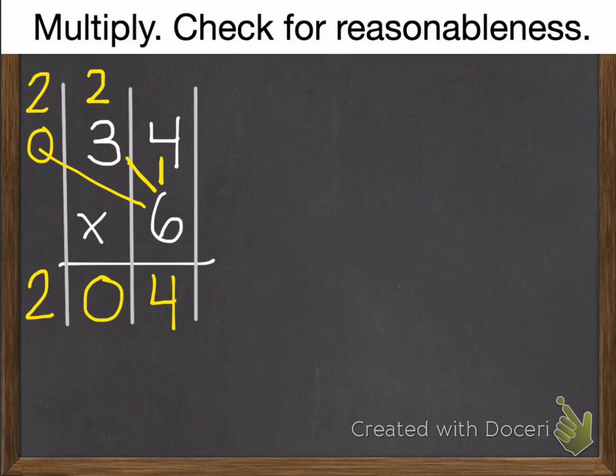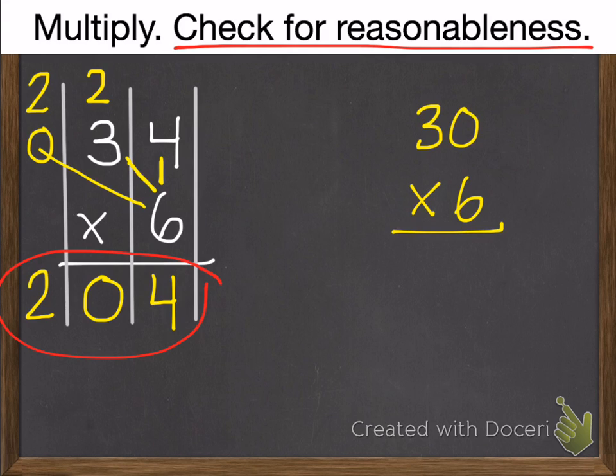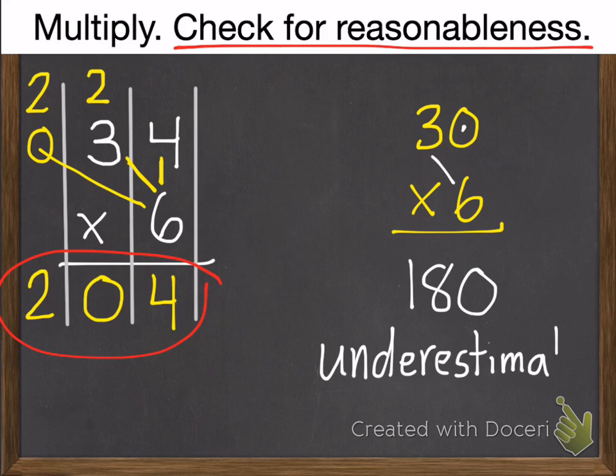But my instructions up here at the top don't just say to multiply. They also say I need to check it. The easiest way to check is to use estimation. So if I round 34 to 30 times 6, I can use my 0 trick. 6 times 3 is 18, plus 1 0 is 180. Since I changed my 34 to a 30, that's going to make this answer a little bit less. So my estimate is an underestimate. So I know the real answer is going to be a little bit more than 180, which I got 204. So I'd say that is reasonable.